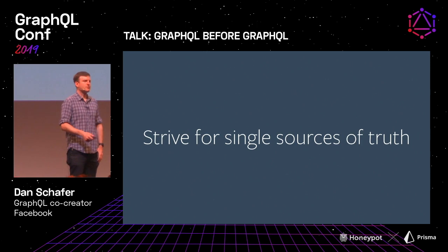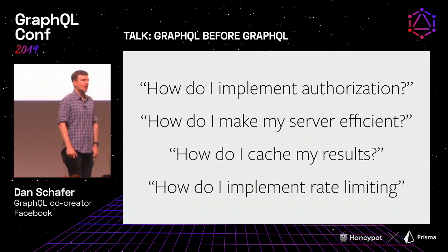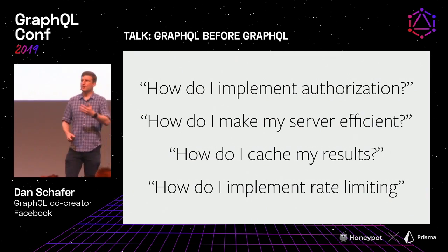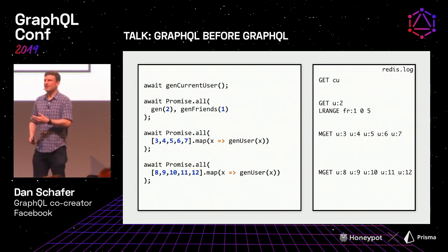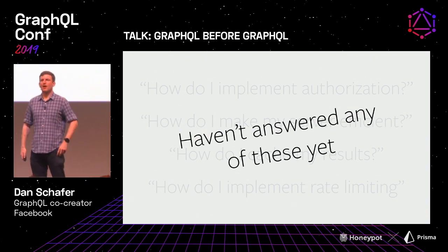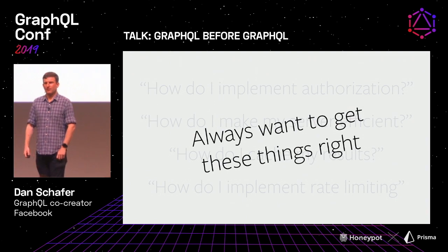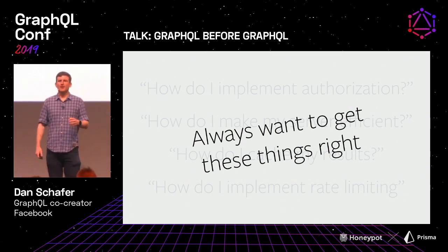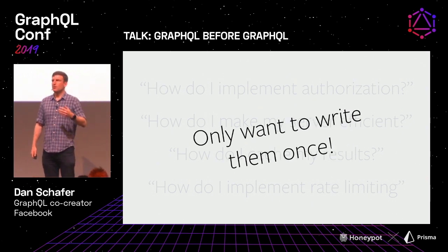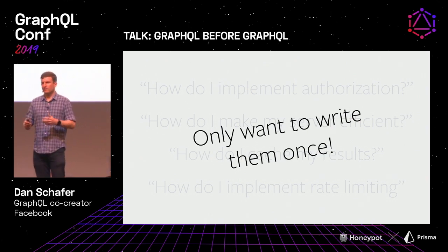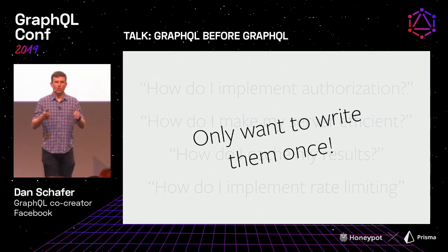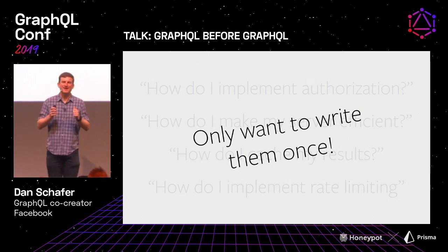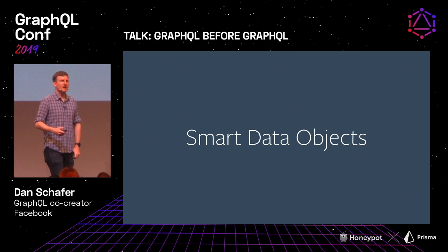The final lesson we learned was to strive for single sources of truth whenever possible. I want to flash back to those four questions — authorization, caching, rate limiting, efficiency — and think about them differently. These questions are really important: you've got to get authorization right, bad caching can take down a DB, rate limiting you want right 100% of the time, not 90%. And if we always want to get things right, we only want to write them once. If you write it twice, in my experience either the first implementation is wrong, the second is wrong, or they're both wrong.